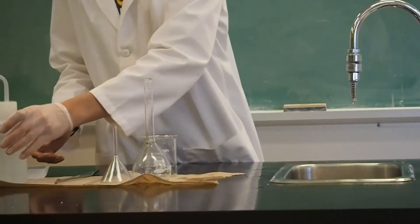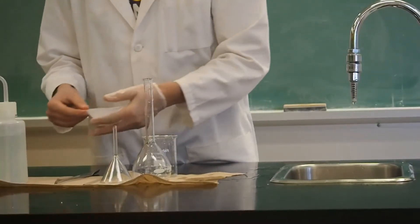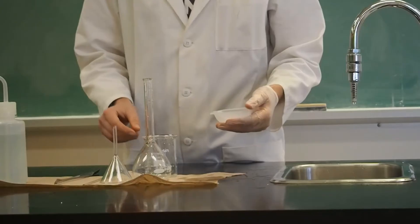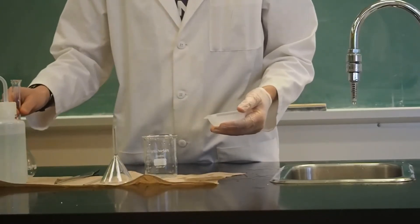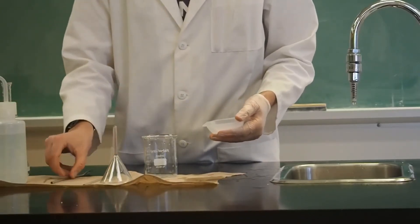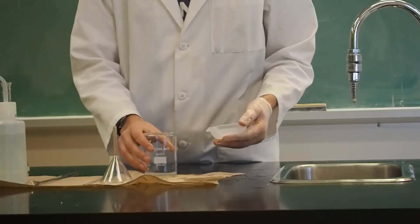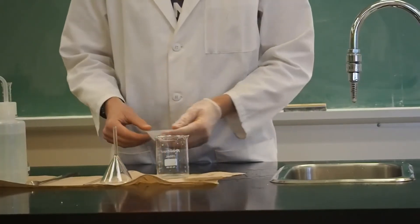After all of your equipment is clean, your next step is to weigh the solute. Use the plastic weighing boat and record precisely the mass from the electronic balance.